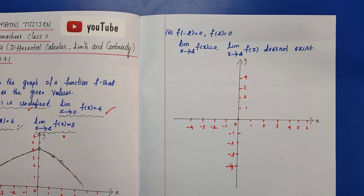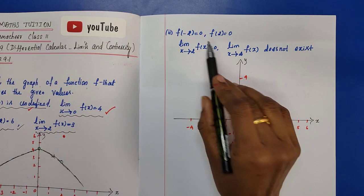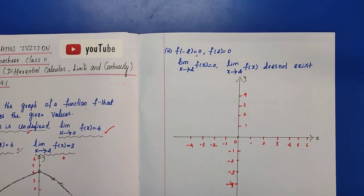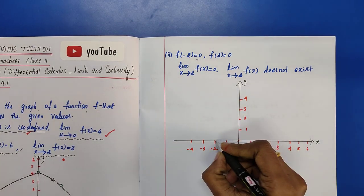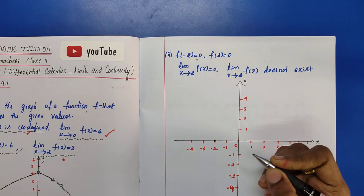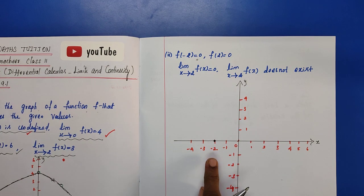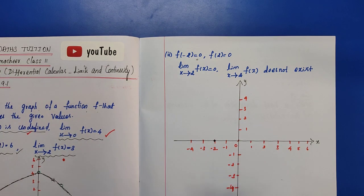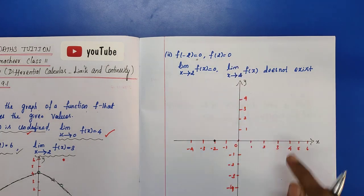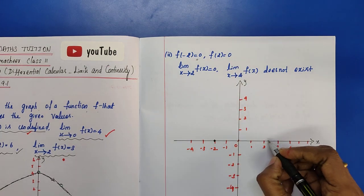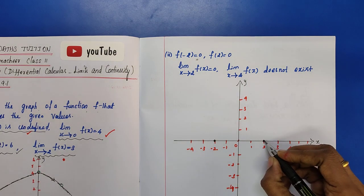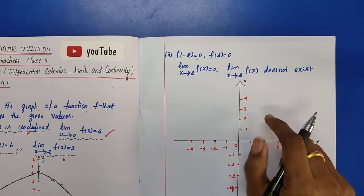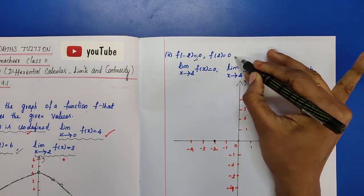Now applying the conditions: f(minus 2) equals 0 means at x equals minus 2, the function value is 0 — marked as a point on the graph. f(2) equals 0 means at x equals 2, the function also takes the value 0 — marked with a filled pointer at (2, 0).